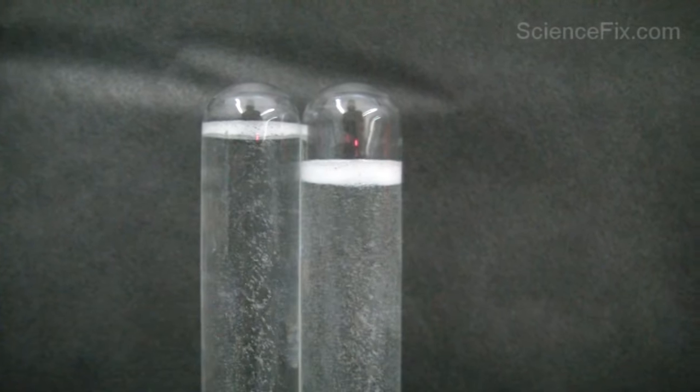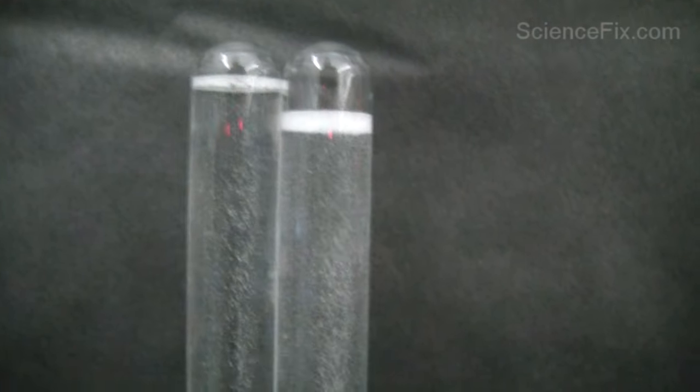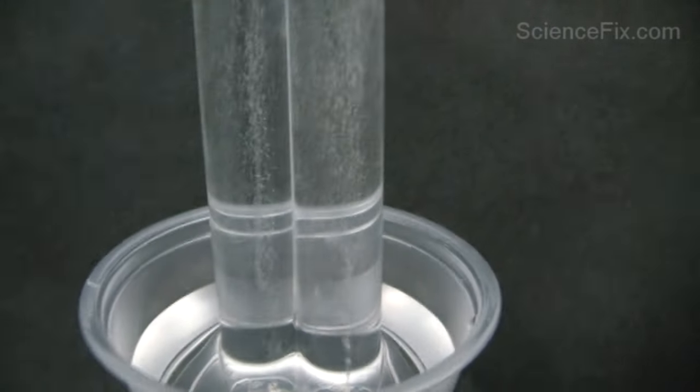This is how experimenters first learned that the ratio of hydrogen atoms to oxygen atoms in water is two to one, thus H2O.